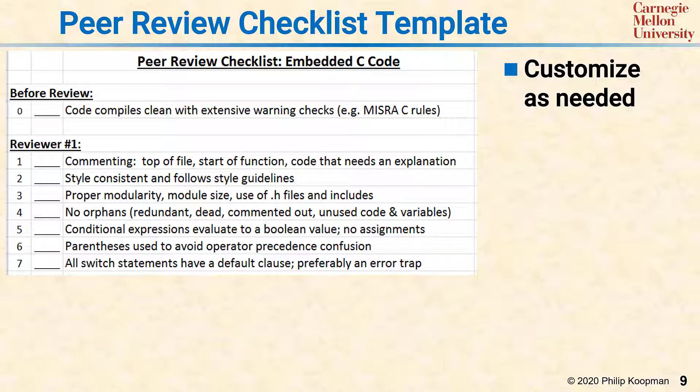Some of these items might be able to be checked by static analysis, and to the degree that your static analysis tools support that, it's okay to take those items off this list and replace them with other items that matter to you. The reviewer should not be spending time redoing something a tool can do, but not all development environments support really robust static analysis, so these are on the list just to make sure the basics are covered.